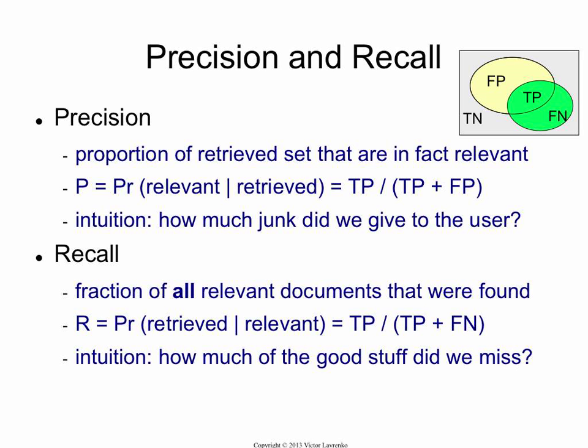Recall is a counterpart of precision — it's the proportion of relevant documents that you managed to find. So out of the entire green set, what percentage did we find? That's the true positives divided by the size of the relevant set, which is true positives plus false negatives. That's the probability of retrieved given relevant. The intuition is: how much of the good stuff did you miss? That's what recall is trying to measure.